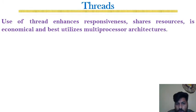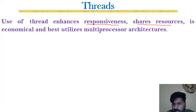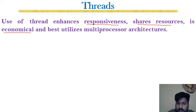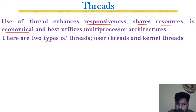Using threads enhances responsiveness — the degree of interaction is increased. We can share resources such as address space. It is economical because we can switch back and forth on a single processor without needing additional peripherals. Threads also best utilize multiprocessor architecture. Threads are of two kinds: user threads and kernel threads.